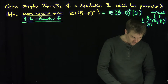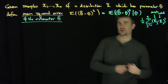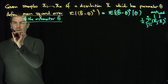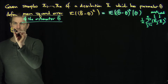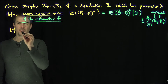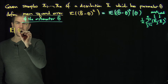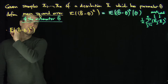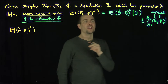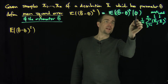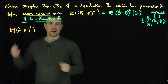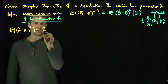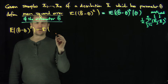Let's prove the bias-variance trade-off. We can take this mean squared error — this is a standard calculation. Take the expected value of theta-hat minus theta, squared. Everything is given theta; I'm just going to suppress that to keep the notation clean. What I'm going to do is insert into this expected value.